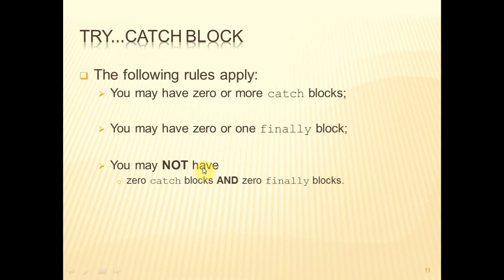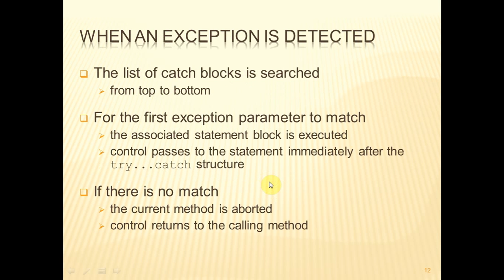Some rules about catch and finally blocks: a try-block may have zero or more associated catch-blocks; a try-block may have zero or one finally-block; and a try-block has to have at least one of them — you cannot have zero catch-blocks and zero finally-blocks. When an exception is thrown, if it is going to be caught, it will be caught by one of those catch-blocks. If you have more than one catch-block, the parameters have to be different on each of the catches. You have to have different exception classes in each of the catch parameter lists.